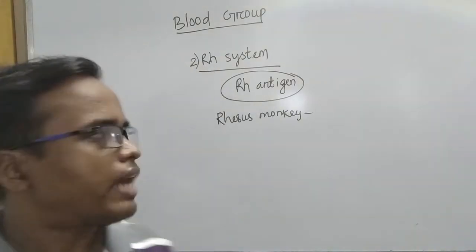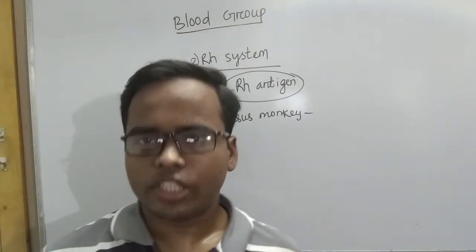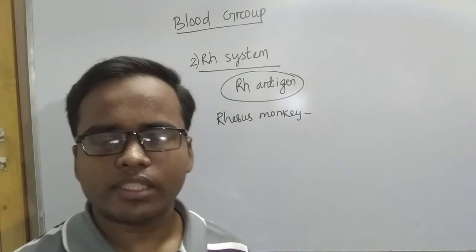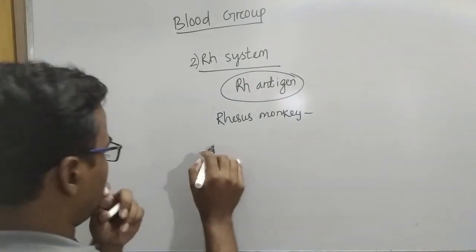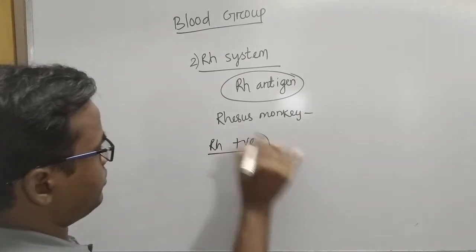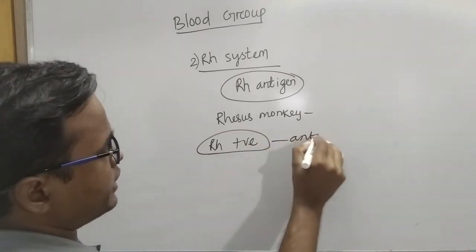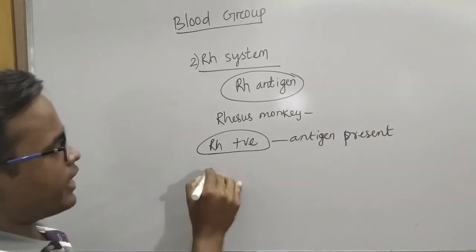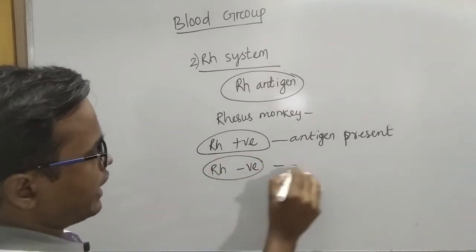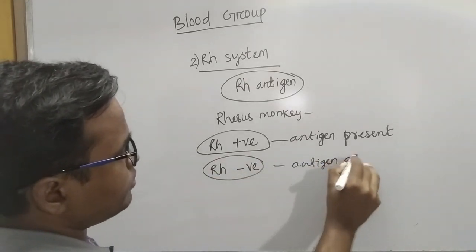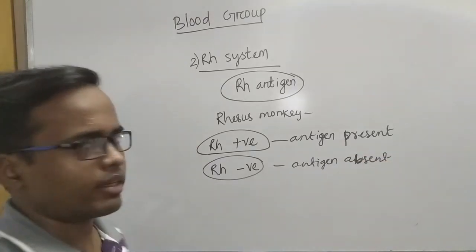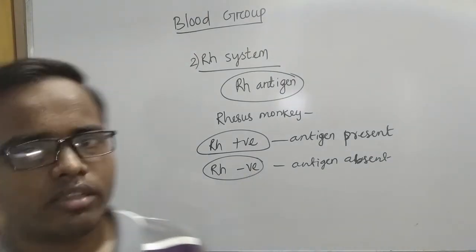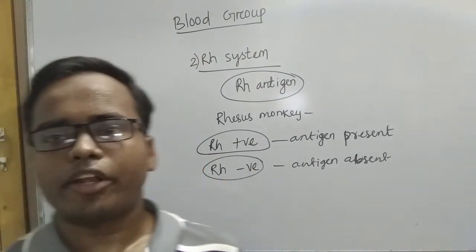Based on the RH antigen, organisms may be positive or negative. If the RH antigen is present on the surface of RBCs, then it is known as RH positive. If the RH antigen is absent in the RBCs, then the person is said to be RH negative.